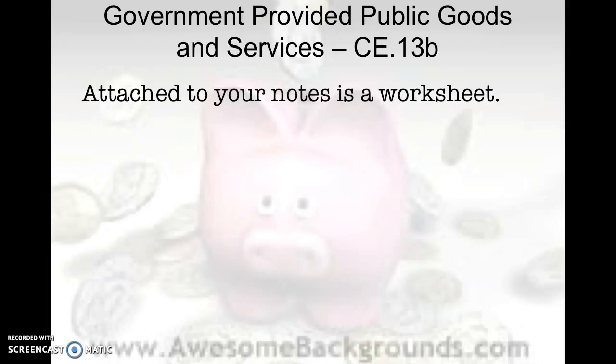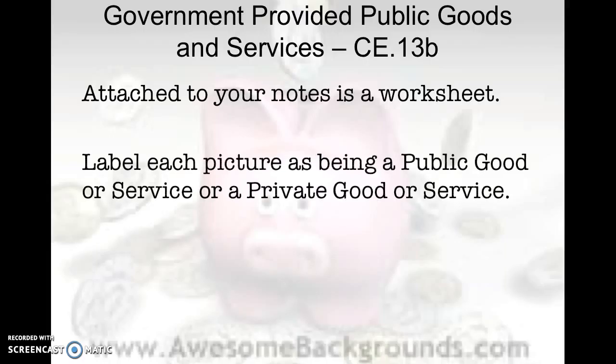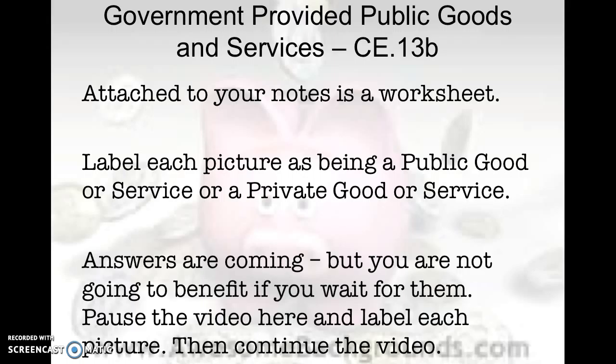Attached to your notes on the back is a worksheet. I want you to label each picture as being a public good or service, or a private good or service. A public good or service is something provided by the government; a private good or service is something provided by an individual or a business. I'm going to go over the answers in this video, but you won't benefit if you just wait for the answers - pause the video, label each picture, then hit play.